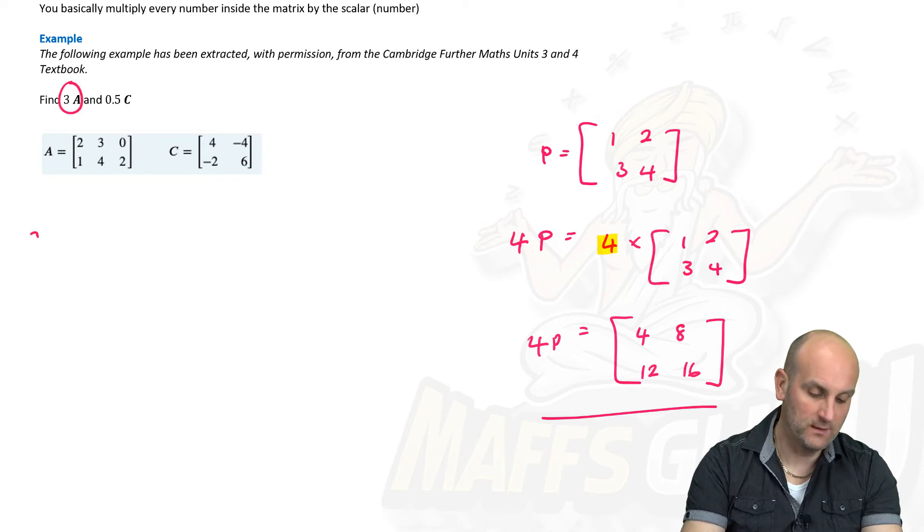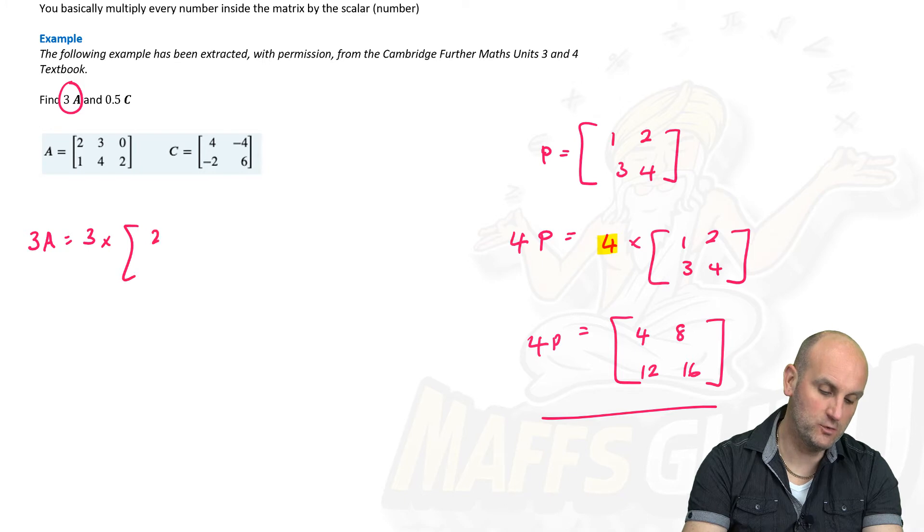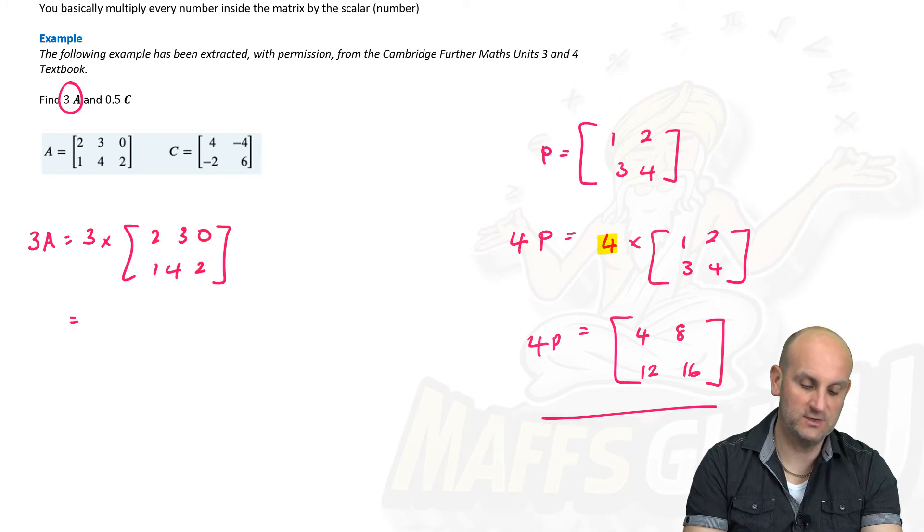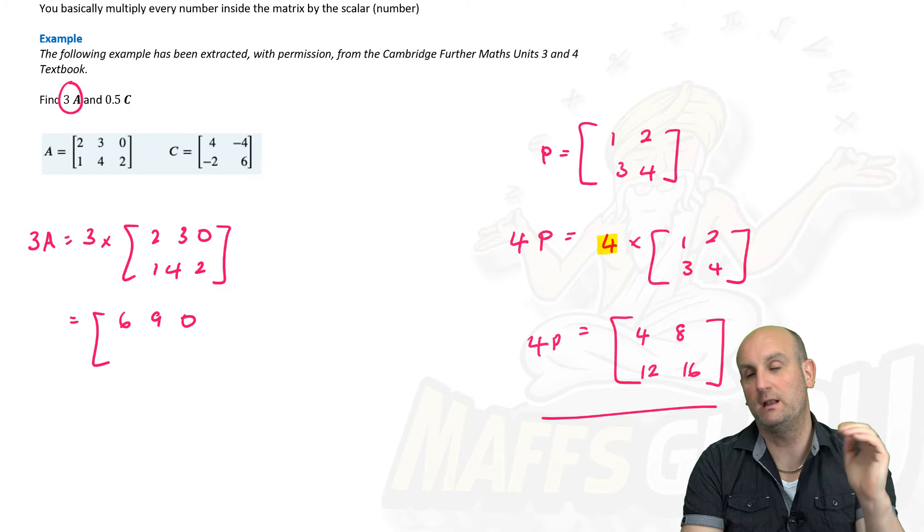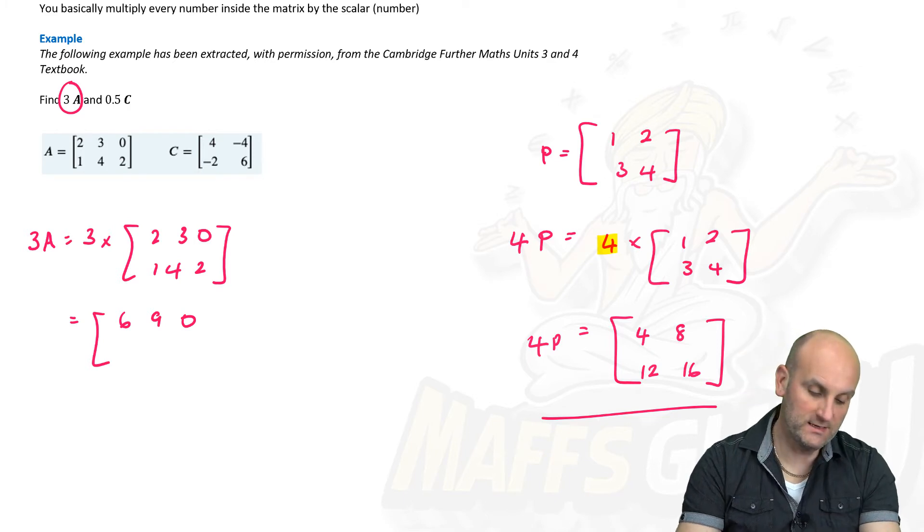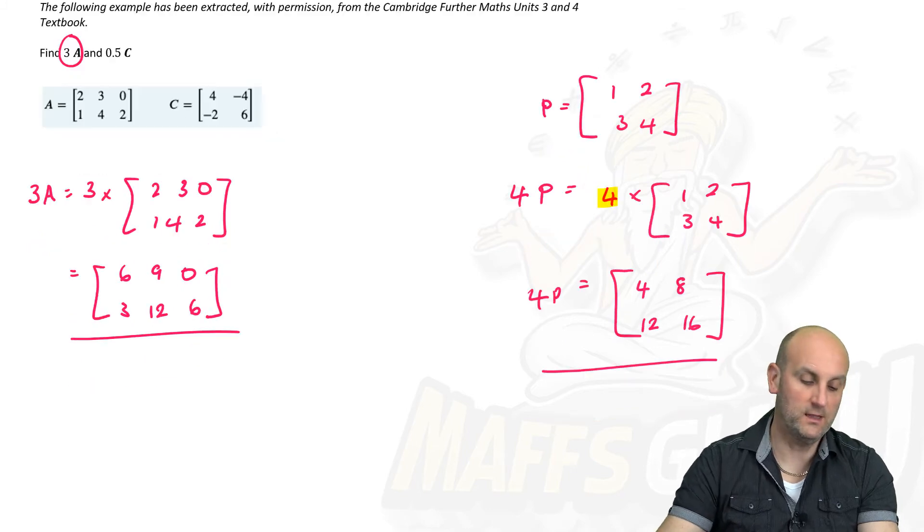Every element inside that matrix gets multiplied by the number. Easy peasy. So, we want to find 3a. So 3a is the same as 3, multiplied by 2, 3, 0, 1, 4, 2. Every element in that matrix gets multiplied by 3. So, 2 times 3 is 6, 3 times 3 is 9, 0 times 3 is 0. Please don't think it's 3. 3 times 1 is 3, 4 times 3 is 12, and 3 times 2 is 6. And there we go.